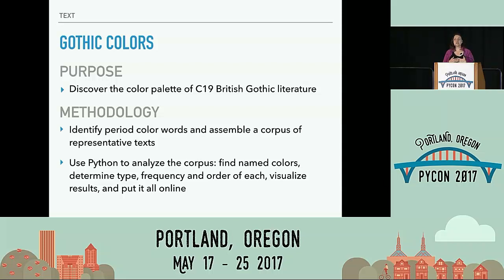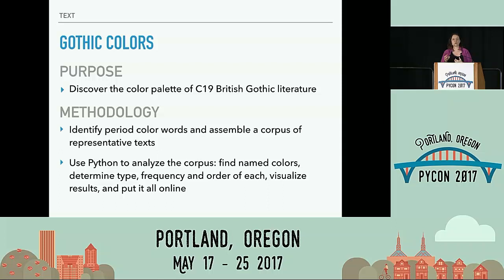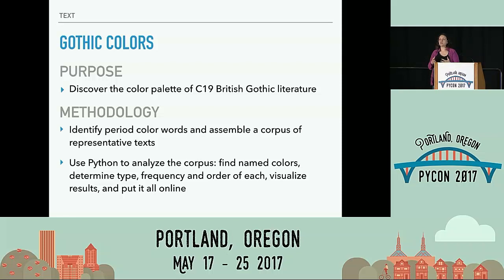And then representative text — Caroline did a ton of work putting together a pretty dynamite corpus. We analyzed 124 texts in this project, most of which came from Project Gutenberg. With Python, we wanted to analyze this corpus and see where color words appeared in Gothic literature. So we would find and name the colors, determine the type of word, track frequency and order to see the evolution of color through the text, visualize results, and put it all online — that was another key requirement of the project.